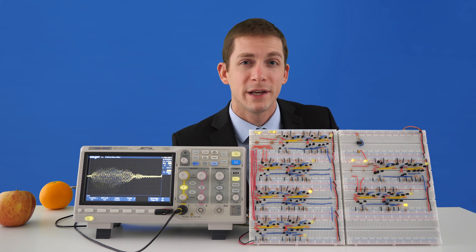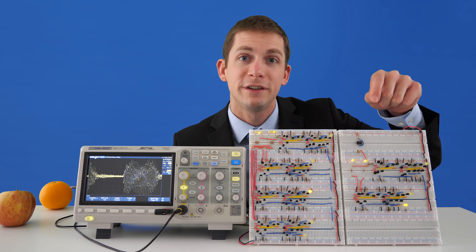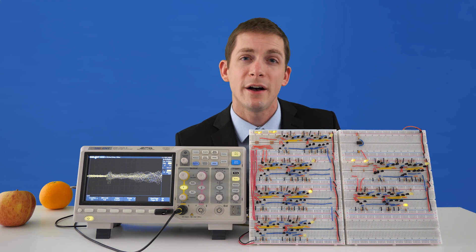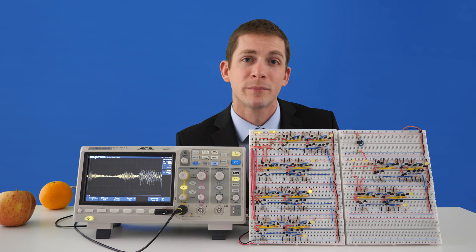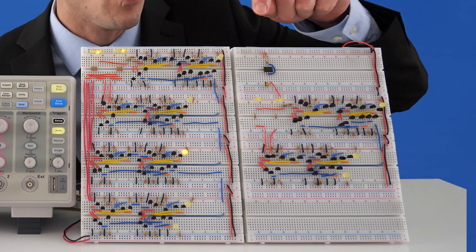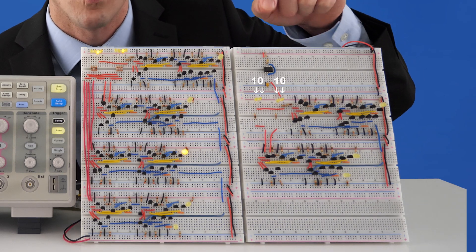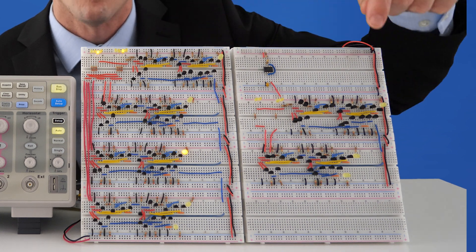They're blinking because it's hooked up to a 555 timer. This allows the circuit to continuously calculate 2 plus 2, 2 plus 2, 2 plus 2, which is represented by 10 plus 10 equals 100.